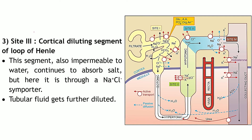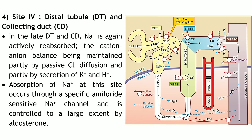Coming to Site 3 — the cortical diluting segment of the loop of Henle. As discussed, the part of the ascending limb located in the cortex acts as Site 3. Here there is only one transporter: the sodium-chloride symporter. So sodium and chloride get reabsorbed at this particular site with just one transporter.